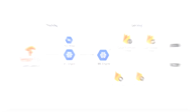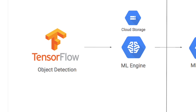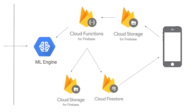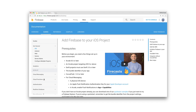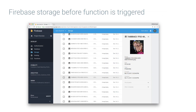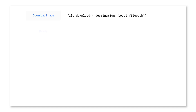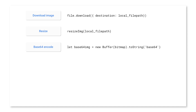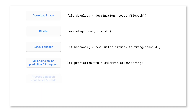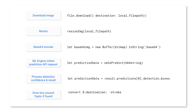The client is a Swift iOS app — a thin client. All it does is upload an image to Firebase Storage. A Cloud Function is triggered whenever an image is uploaded to a specific storage bucket. That function, written in Node.js, downloads the image, resizes it, and Base64 encodes it to prepare it for the ML Engine online prediction request. If the confidence returned is greater than 70%, it draws a bounding box around the object using ImageMagick, which is available in Google Cloud Functions.